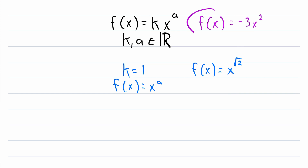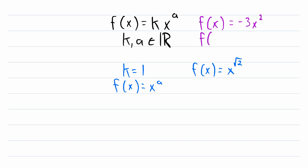To make that extra clear, if we were to evaluate this function at x equals 2: first, we would raise 2 to the power of 2, which is 4, and then that gets multiplied by the coefficient of negative 3. So we would get negative 12. You can see that the coefficient is not being raised to the power.